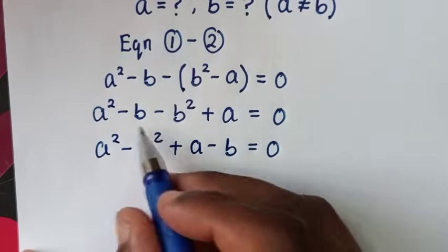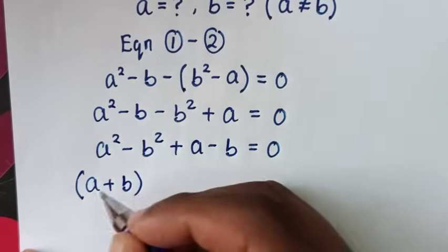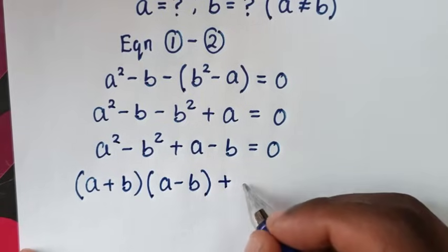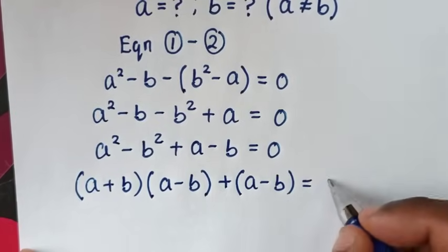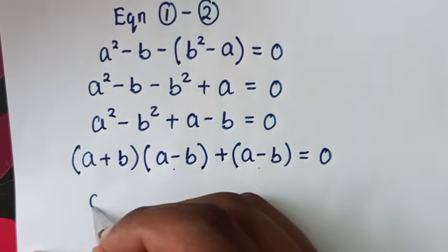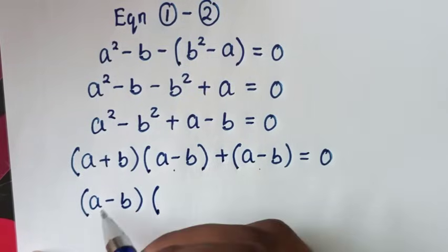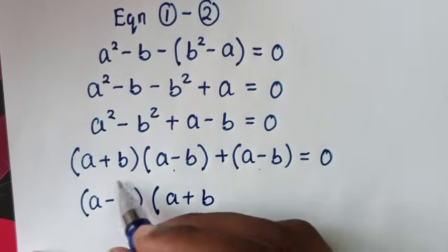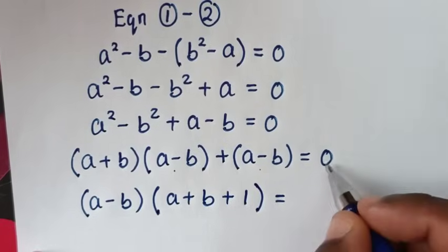Now, a squared minus b squared is a difference of squares, so it factors as (a plus b)(a minus b). Then, plus (a minus b) is equal to 0. So, (a minus b) is common, and we factor it out to get (a minus b)(a plus b plus 1) equals 0.